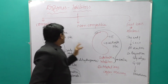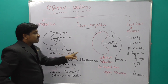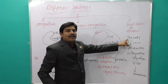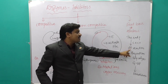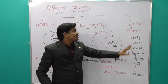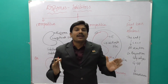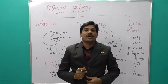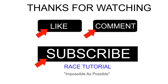In summary: competitive inhibitors have substances that closely resemble the substrate; non-competitive inhibitors have no similar structure to the substrate and bind elsewhere; and feedback inhibitors involve the end product of a chain of enzyme catalytic reactions inhibiting the first reaction. This is very important for NEET and other competitive examinations. Please like, comment, and subscribe.